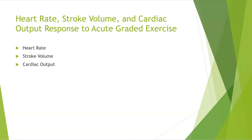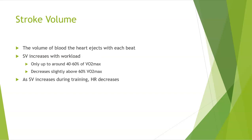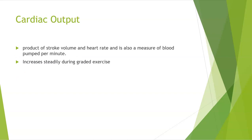Heart rate increases linearly with increasing workload until max heart rate is reached. Trained individuals tend to have lower resting heart rates. Stroke volume is the volume of blood the heart ejects with each beat; it increases with workload only up to around 40 to 60% of VO2 max, and decreases slightly beyond that. As stroke volume increases during training, heart rate decreases. Cardiac output is the product of stroke volume and heart rate — a measure of blood pumped per minute — and increases steadily during graded exercise.